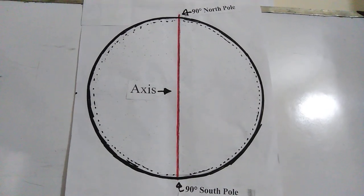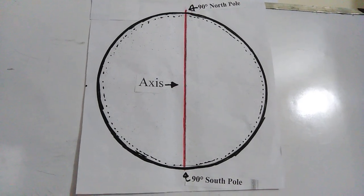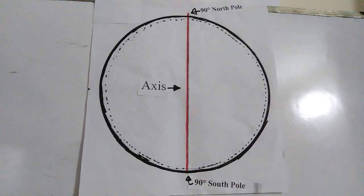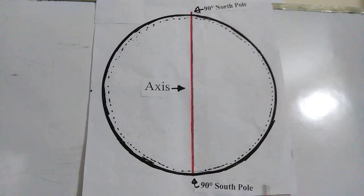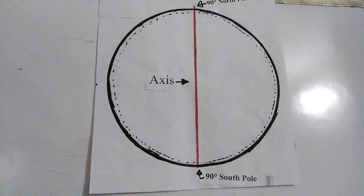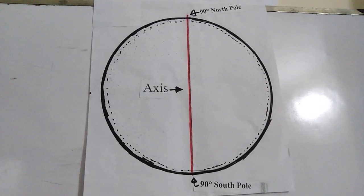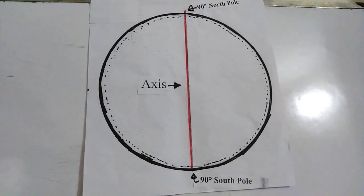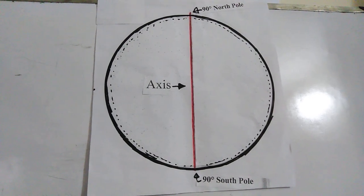The axis is a vertical line. It runs from north to south. The northern extreme point of the axis is called the north pole, and the southern end point is called the south pole. The Earth rotates on this axis from west to east regularly. Due to the rotation of the Earth on this axis, day and night happen.